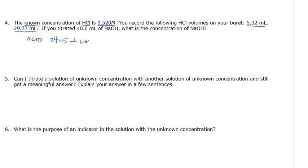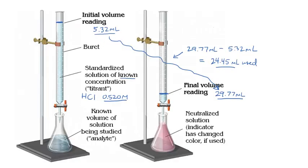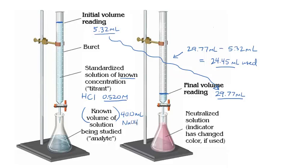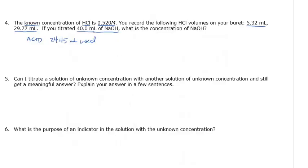That was the amount of volume actually used up in this reaction. The problem says we titrated 40 milliliters of the base. Down in the flask, we have a known volume of 40 milliliters of my base, which is NaOH, whose concentration I don't know — and that's what I'm looking for. So I used 40 milliliters of base and 24.45 milliliters of acid.